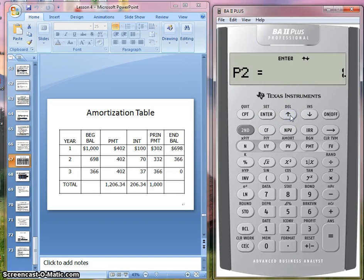Now if we go back to change P1 to 2 and P2 also 2 and enter, you see the balance is now the remaining balance after two years or two payments. The principal payment is now $332 from the second payment, while the interest is only about $70.